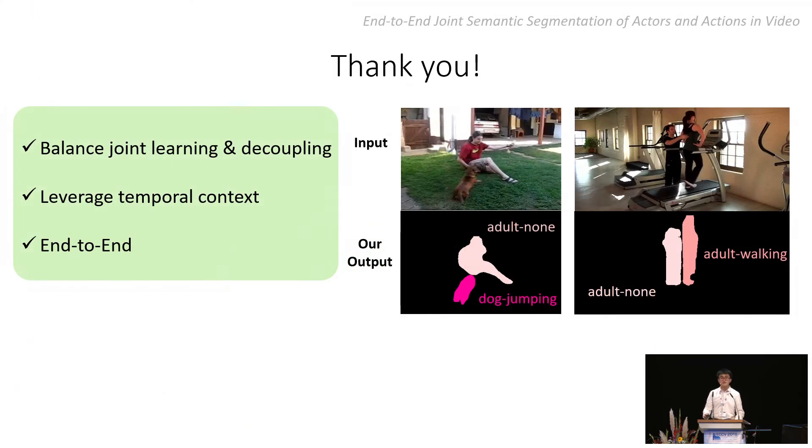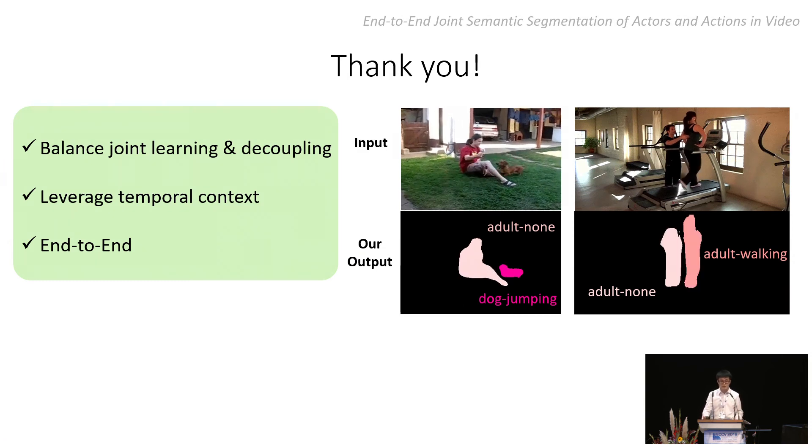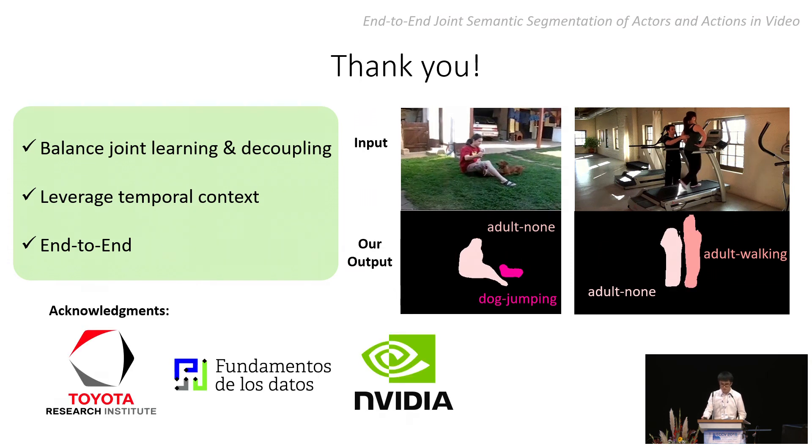In summary, what we have learned from this research is not only a powerful model that does the actor action semantic segmentation, but also several guiding principles that could benefit research in this field. In the model design, we should balance the joint learning and decoupling of actor action knowledge. Besides, temporal context is critical to consider in the model. Moreover, end-to-end architecture is preferred so that different subtasks can benefit from each other via parameter optimization. We thank our sponsors. We will be at poster number 87 right after this session to discuss in more detail. Thank you all.